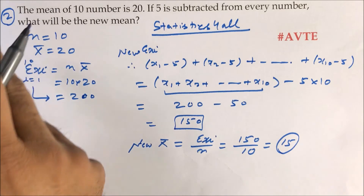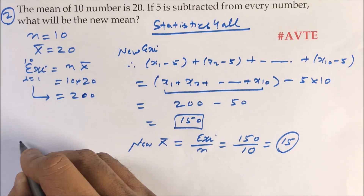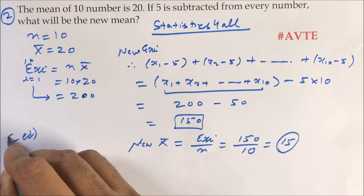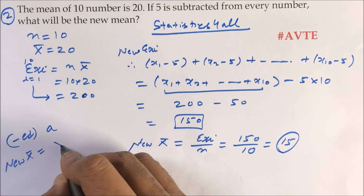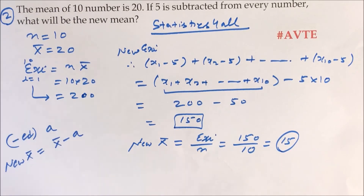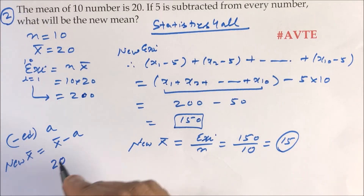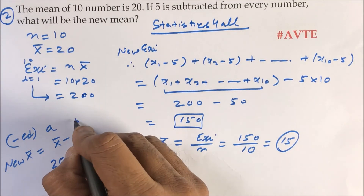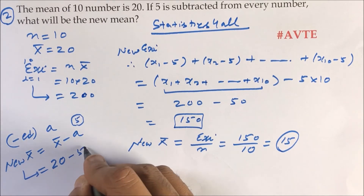As mentioned in the first video — kindly refer to that video also — if each item is decreased by a, then your new mean will be old mean minus a. Here the old mean was 20, and items are decreased by 5, so the new mean will be 20 minus 5, that is 15.